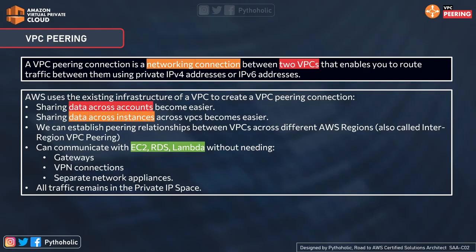We can establish a peering relationship between two VPCs across different AWS regions — this is called inter-region VPC peering. The key benefit is that you can communicate with EC2, RDS, or even AWS Lambda without needing a gateway connection, VPN connection, or separate network appliances. All traffic remains in the private IP space.